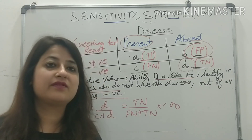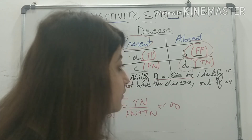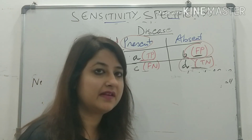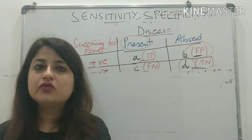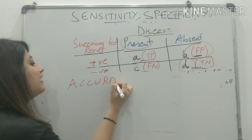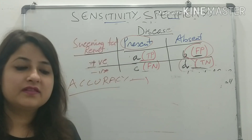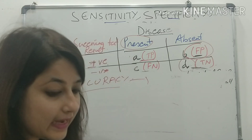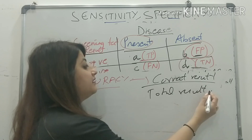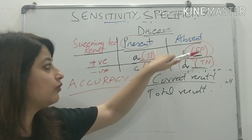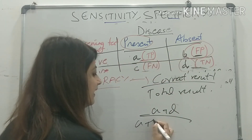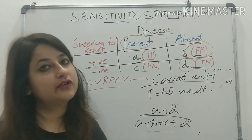So these are the four very important parameters: sensitivity, specificity, positive predictive value, negative predictive value. There is one more thing — the accuracy of a screening test. Accuracy is given by the formula: correct results upon total results. The correct results are true positives plus true negatives, which is A plus D. Total results are A plus B plus C plus D. So accuracy equals A plus D upon A plus B plus C plus D.